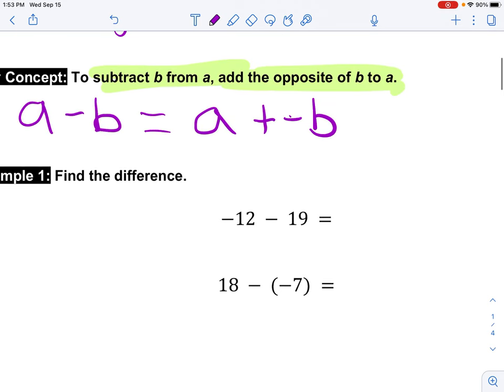So let's dig into an example. This first example says negative 12, subtract 19. So what I'm going to do is I'm going to change this subtraction to an addition, and then the opposite of positive 19 is negative.